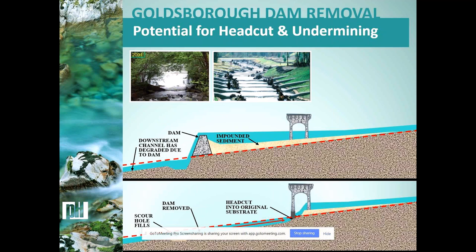The Goldsboro Dam in Massachusetts was removed in 2001. It had significant channel degradation below the dam — a headcut had extended all the way to the dam itself from a change in base level elevation downstream. Removing the dam meant not just mobilizing impounded sediment but cutting into the original riverbed, potentially unraveling the system. There was an upstream bridge of concern. The solution was to install a series of small weirs, though this likely created a long-term maintenance challenge while achieving fish passage for certain species.